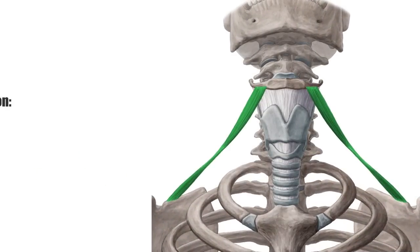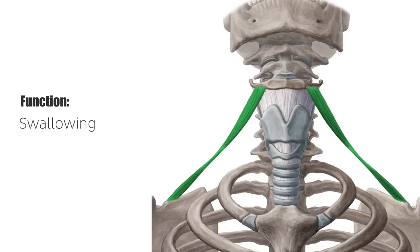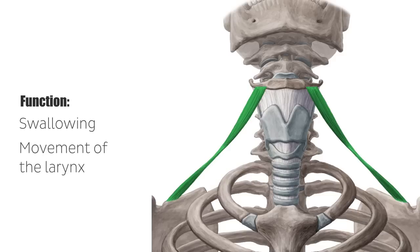The infrahyoid muscles are responsible for the positioning of the hyoid bone along the suprahyoid muscles. They play an active role in swallowing and the movement of the larynx. More specifically, the omohyoid assists the sternohyoid and the thyrohyoid in depressing the hyoid.